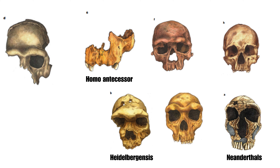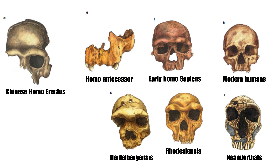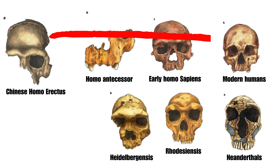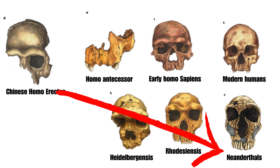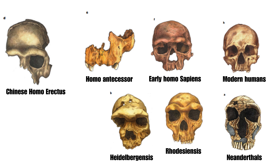Homo antecessor challenges Heidelbergensis as the last common ancestor, showing sapiens-like facial features. Fossils suggest primitive Homo antecessor facial morphology existed in some late Chinese Homo erectus and persisted in Homo sapiens in Africa, but was likely lost in Heidelbergensis, Rhodesiensis and Neanderthals.